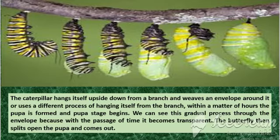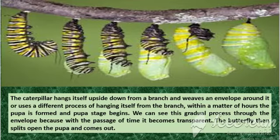Do you know what happens inside the pupa? Inside the envelope of the caterpillar, the body gradually transforms into a beautiful butterfly. We can see this gradual process through the envelope because with the passage of time, it becomes transparent.